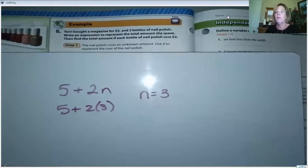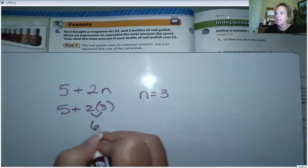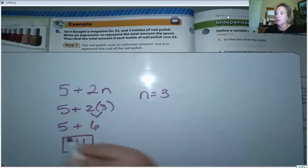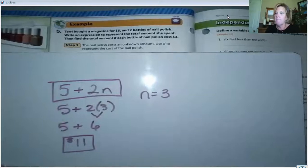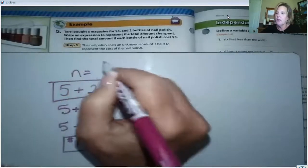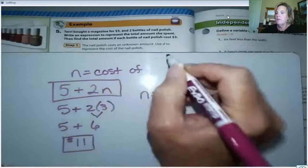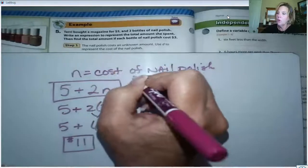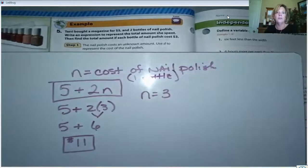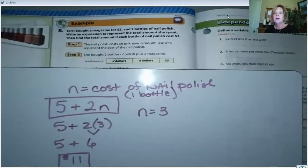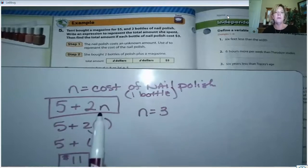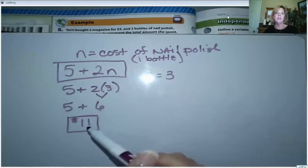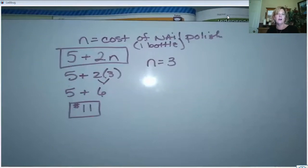Order of operations says we do the multiplication first. So two times three is six, plus five is eleven dollars. We should have defined the variable: N represents the cost of one bottle of nail polish. The algebraic expression 5 + 2N represents the situation. Once we replace the variable with three, we get a total of eleven dollars that it costs for her purchase.